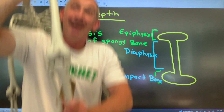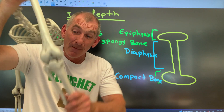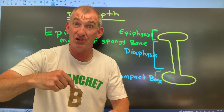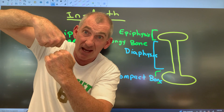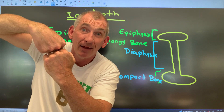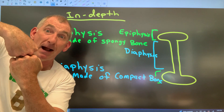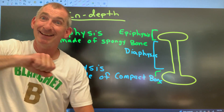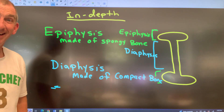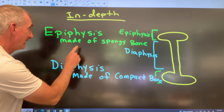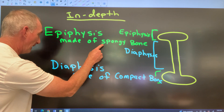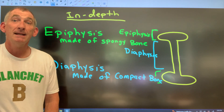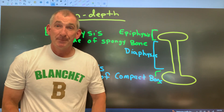Think about it — what happens when I jump and land? The two ends could hit each other, and by being made up of spongy bone, which is a little bit squishy, they can absorb the impact. The epiphyses are made up of spongy bone; the diaphysis is made up of compact bone.